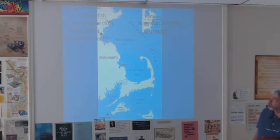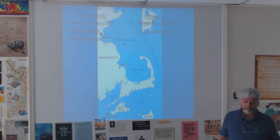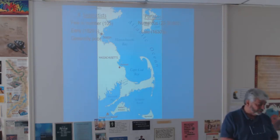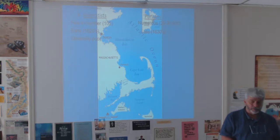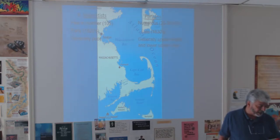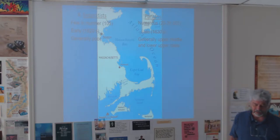The Separatists were generally poor — they were working class people. That was one of the problems when they went to Holland: they could not find jobs for skilled laborers and had to work at jobs below their skill level and not very well paying. The Puritans, on the other hand, were generally upper class. Most of them owned land in England, so they had more money.